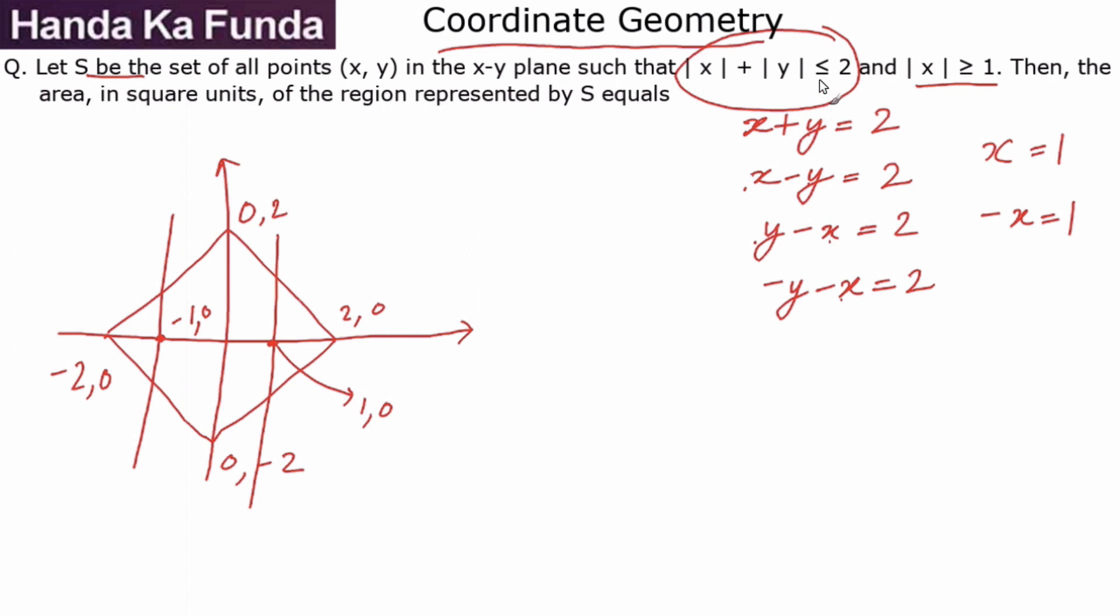Now note, ≤ sign was here, so less than would mean everything which is inside it. Greater than sign is here, so that would mean everything that is outside it. So we need stuff that is inside these four lines and outside these two lines for x = 1 and -1, which means the portion that we are looking for will actually be this shaded area triangle and this shaded area triangle.